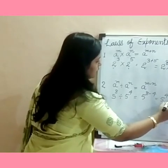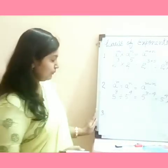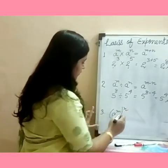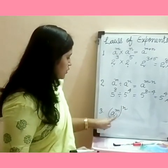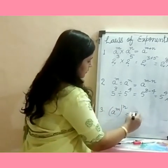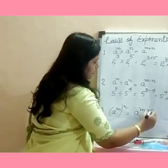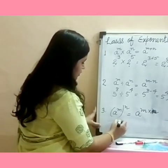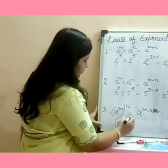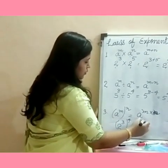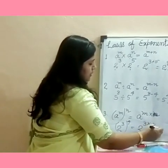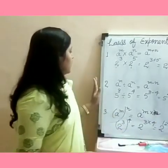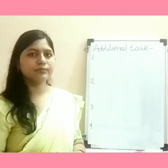The next rule is: if a number has two powers — for example, a raised to the power m, all raised to the power n — then the exponents are multiplied: a raised to the power m×n. For example, 2 raised to the power 3, all raised to the power 4, means 2 raised to the power 3×4, which is 2 raised to the power 12.